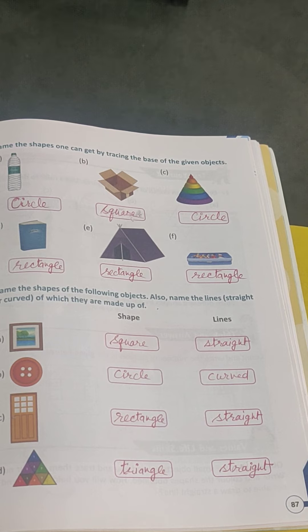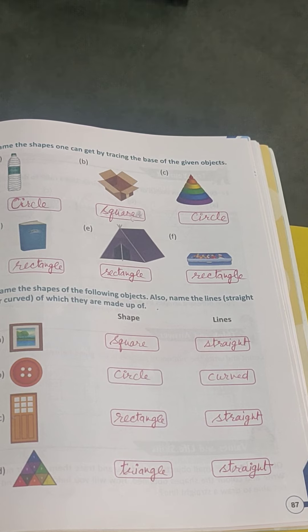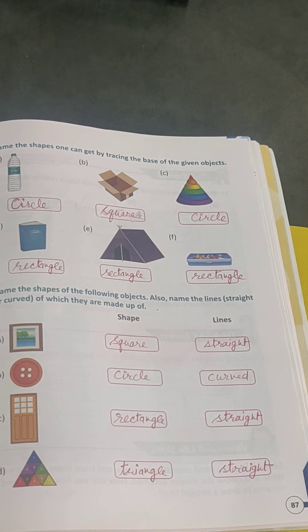Number 4 is a triangle. Shape: triangle. Lines: straight.